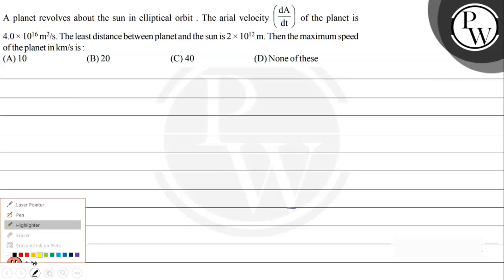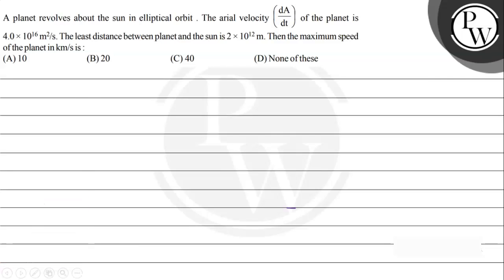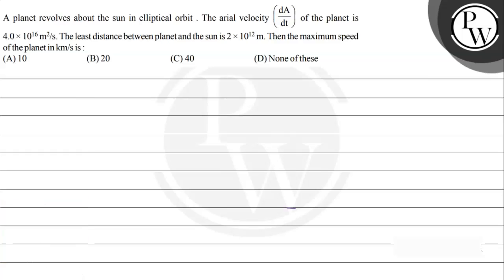Let's read the given question. A planet revolves about the sun in an elliptical orbit. The aerial velocity dA/dt of the planet is 4×10¹⁶ m²/s. The least distance between the planet and the sun is 2×10¹² m. Then the maximum speed of the planet in km/s is: option A) 10, option B) 20, option C) 40, option D) none of these.